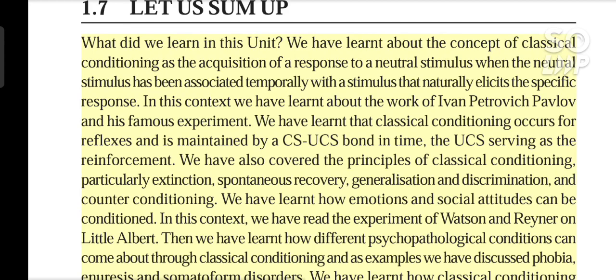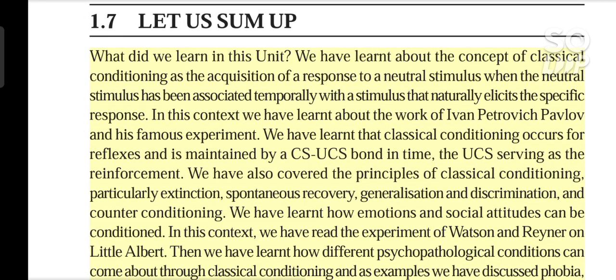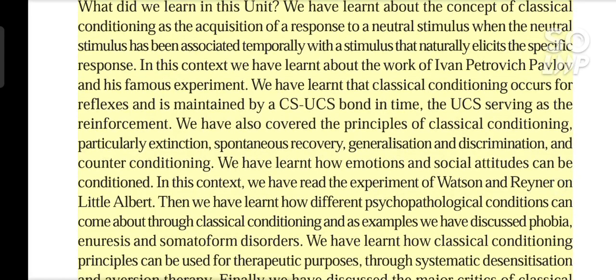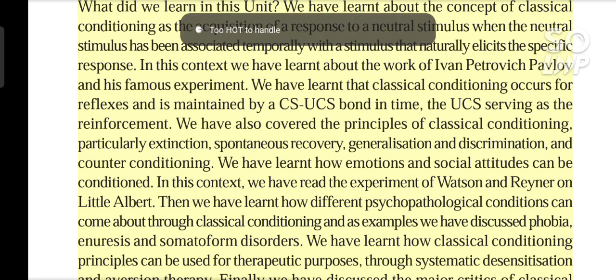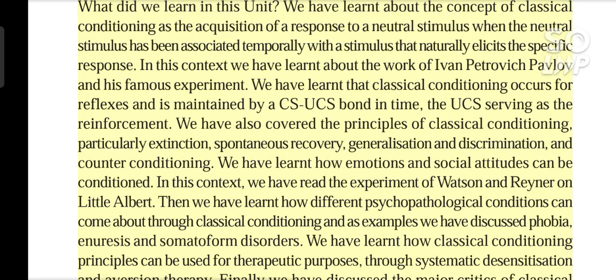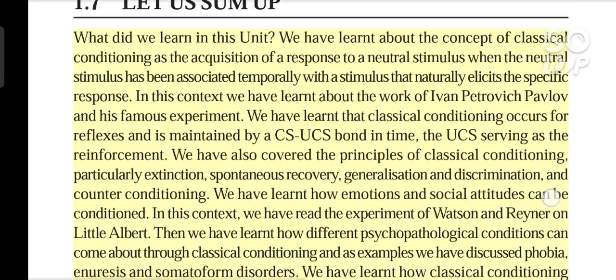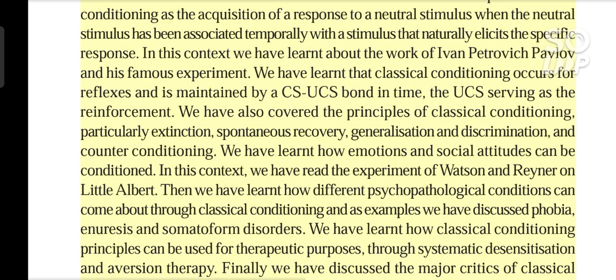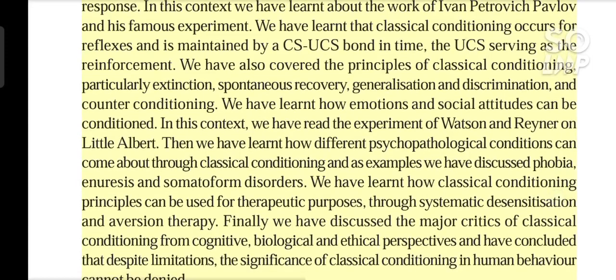What did we learn in this unit? We have learned about the concept of classical conditioning as the acquisition of a response to a neutral stimulus when the neutral stimulus has been associated temporarily with a stimulus that naturally elicits the specific response. We have learned that classical conditioning occurs for reflexes and is maintained by a CS–UCS bond in time, the UCS serving as the reinforcement. We have also covered the principles of classical conditioning, particularly extinction, spontaneous recovery, generalization and discrimination, and counter-conditioning.